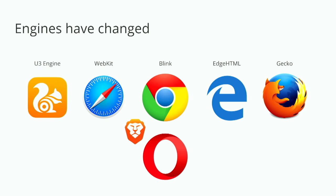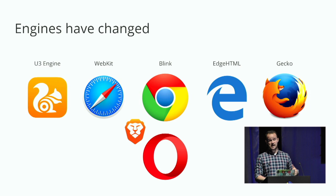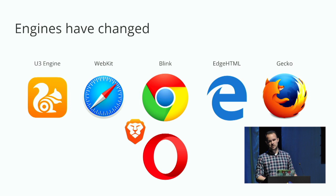As front-end engineers, what we care about is the engine we need to target. The U3 engine is actually larger than Safari, but most of us don't know how it works inside because it's a proprietary WebKit fork with no access. Then we have the established players: WebKit, Blink, EdgeHTML, Gecko. We also see new browsers like Brave using whatever engine is available on the underlying platform — switching between Electron on Windows, WebKit on iPhone, and Android browser on Android. This shows that web compatibility has improved so much that the engine itself is no longer a competitive advantage.